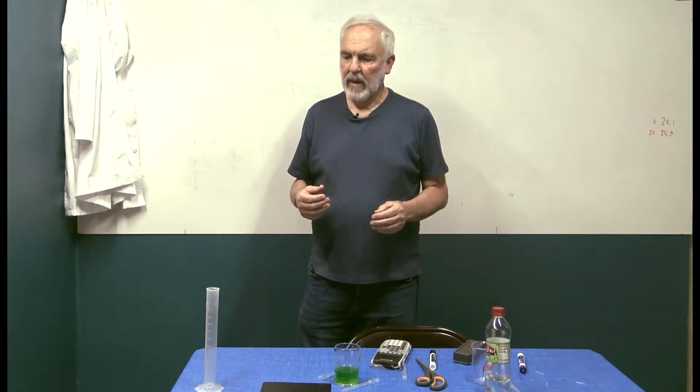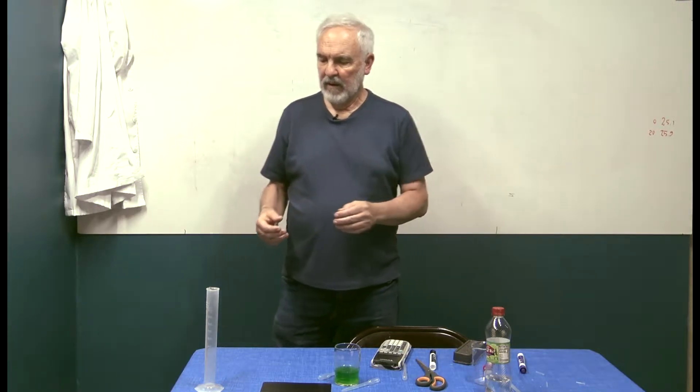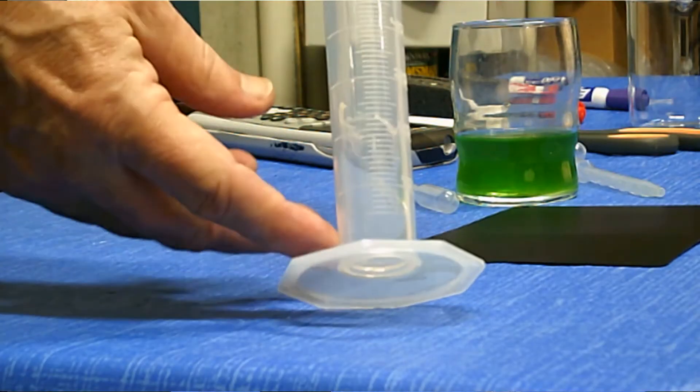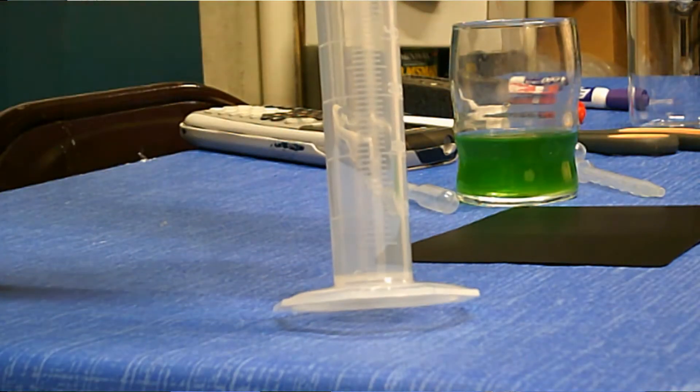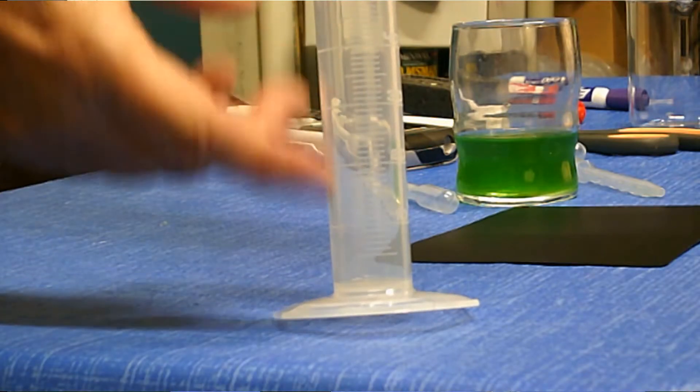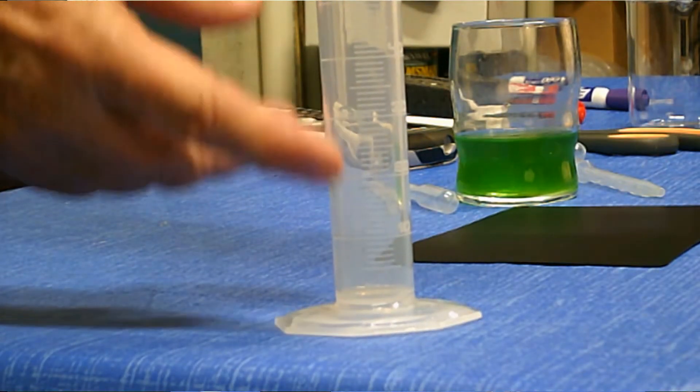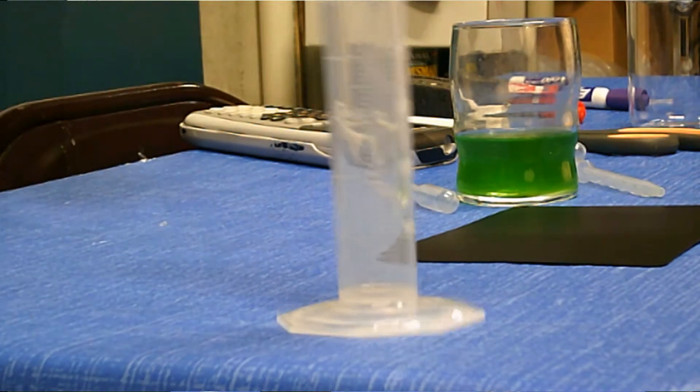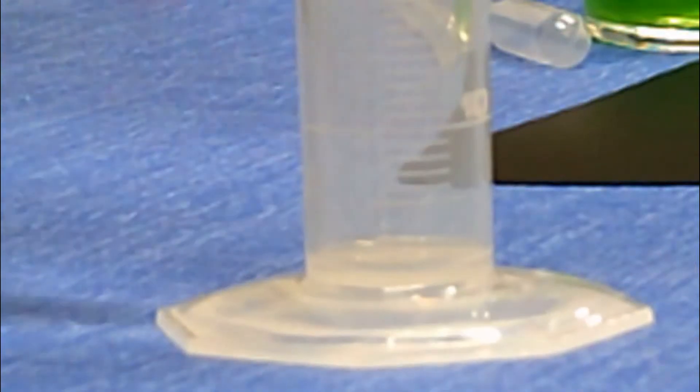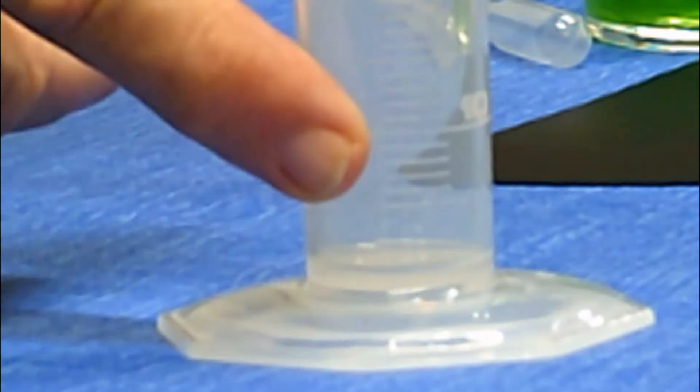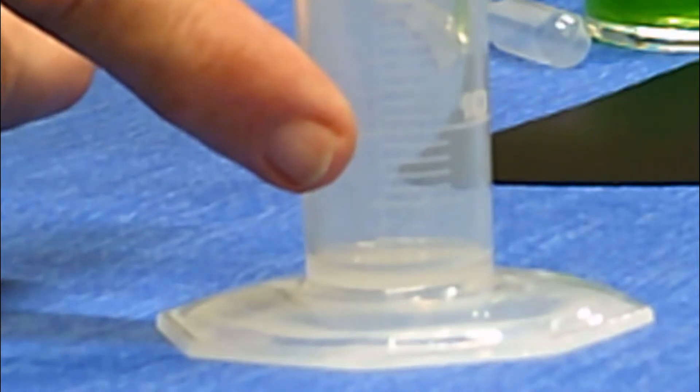So let's begin by looking first at our instrument. This graduated cylinder is marked off in cubic centimeters, but the major lines are 10, 20, 30, and so forth. Between the base and the five cubic centimeter line, there are no markings, so we're going to have to allow for that.